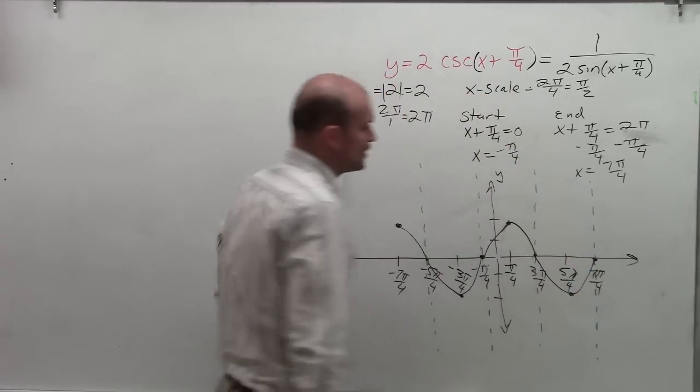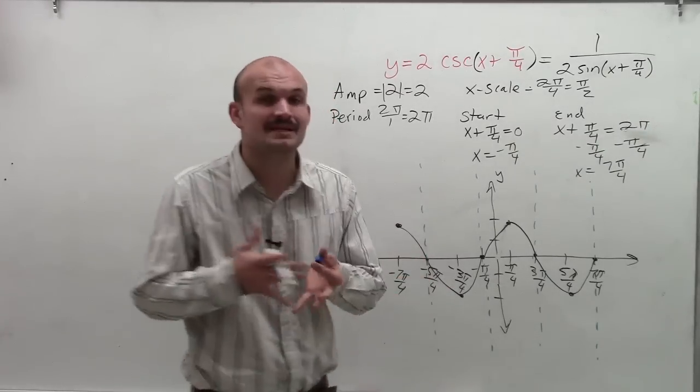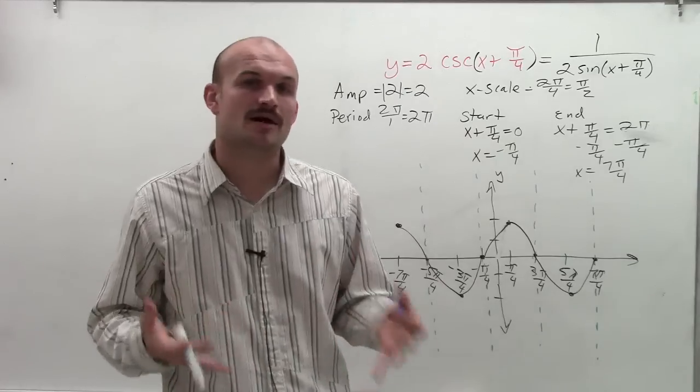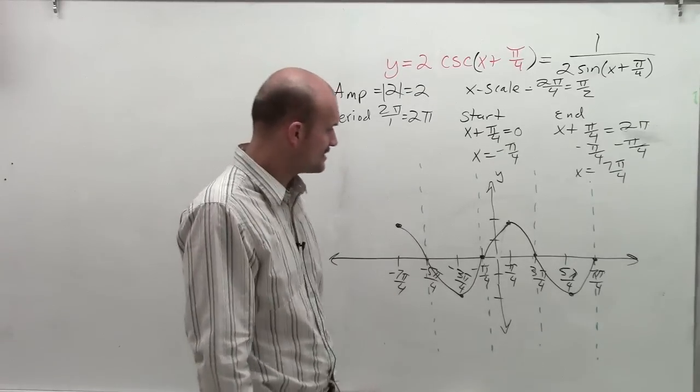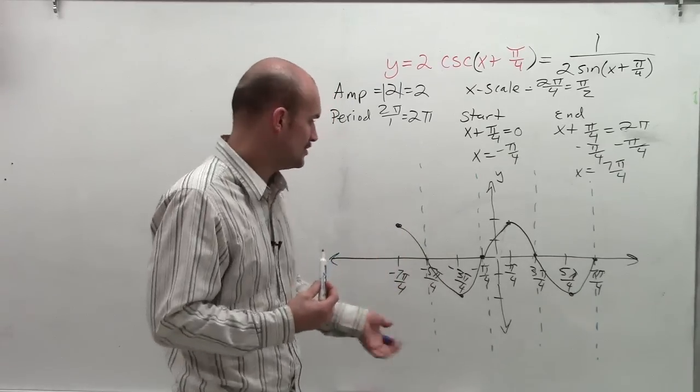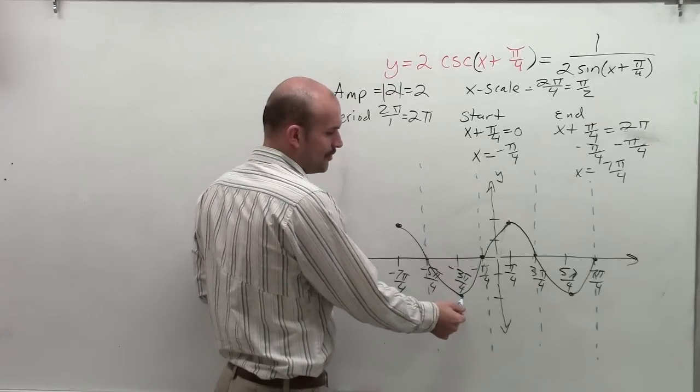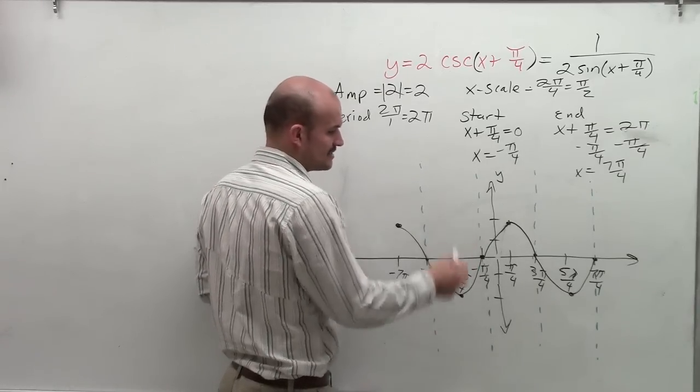Now remember, your asymptotes are where your graph is going to approach, right? So that means my cosecant graph needs to approach each one of my asymptotes. So how am I going to graph that? Well, when you look at a table, what you would notice is your cosecant and your sine graph are both going to have the same point at the max and the minimums.